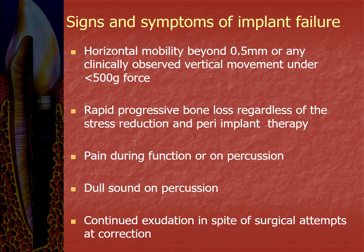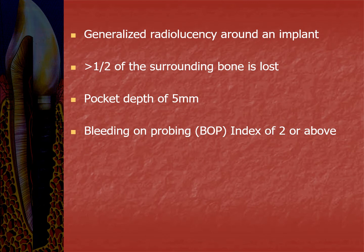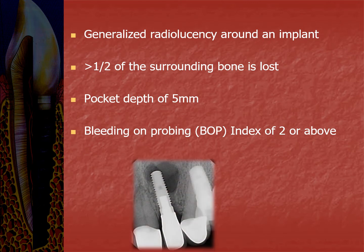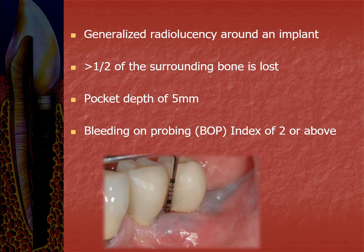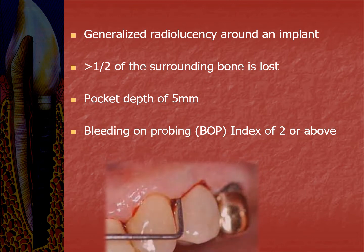Signs and symptoms of implant failure include: horizontal mobility beyond 0.5 mm or any clinically observed vertical movement under less than 500 gram force; rapid progressive bone loss regardless of stress reduction and peri-implant therapy; pain during function or on percussion; dull sound on percussion; continued exudation in spite of surgical attempts at correction; radiolucency around an implant where greater than half of the surrounding bone is lost; a pocket depth of 5 mm; and bleeding and probing index of 2 or above.